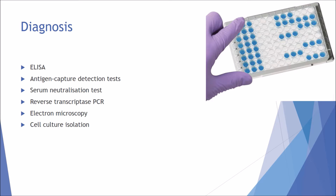Ebola can be diagnosed in multiple ways: enzyme-linked immunosorbent assays (ELISA), antigen capture detection tests for specific Ebola antigens, serum neutralisation tests, and reverse transcriptase PCR. Since Ebola is an RNA virus, reverse transcriptase is used to transcribe RNA into DNA for amplification and analysis. Because viruses are too small to see by light microscopy, electron microscopy — with its superior resolution — is used to visualise Ebola. The virus can also be isolated and grown using cell culture mediums for analysis.